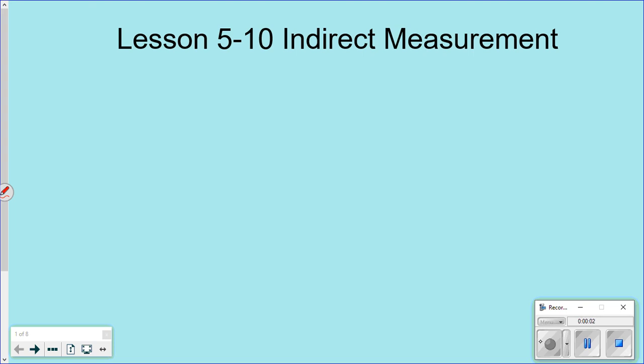Hi everybody, this is the last lesson of the chapter. It's called Lesson 510, Indirect Measurement. We're going to be putting together everything we're learning, using proportions, solving proportions, setting them up for story problems, everything we've been learning and talking about is going to be used today.